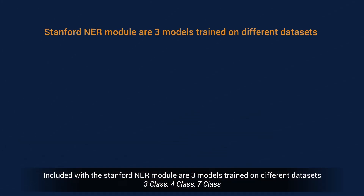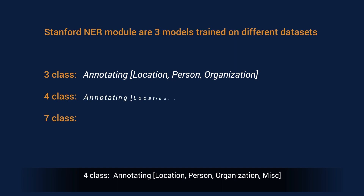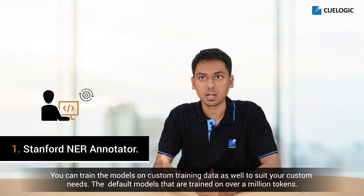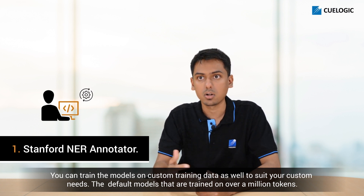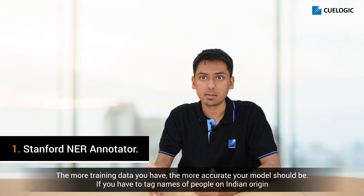Included with the Stanford NER modules are three modules trained on different data sets: three class, four class, and seven class. The three class data set contains location, person, organization. Four class annotates location, person, organization, and other miscellaneous. You can train your models on custom training data as well to suit your custom needs. The default models are trained on a million tokens. The more training data you have, the more accurate your model should be. For example, if you want to tag names of people of Indian origin and a corpus does not already exist, you probably want to train your own custom data set.